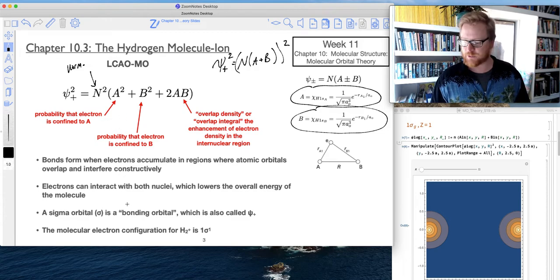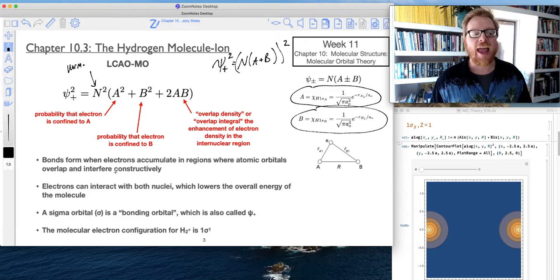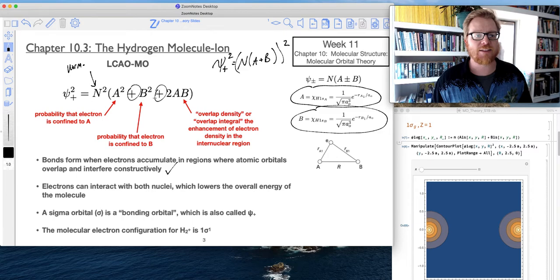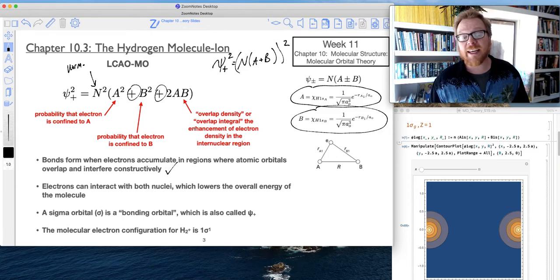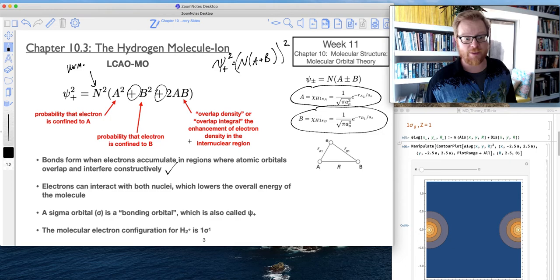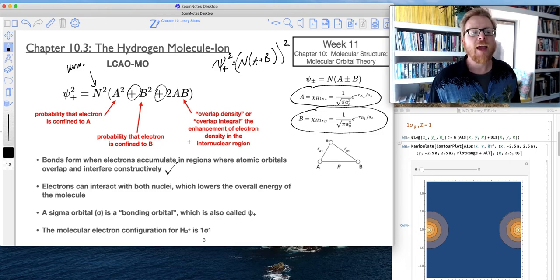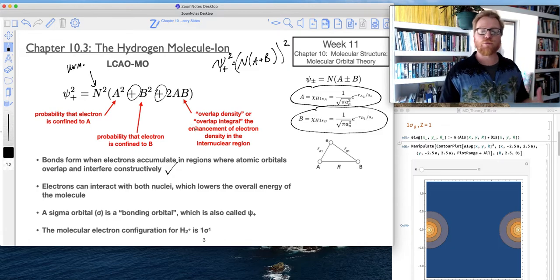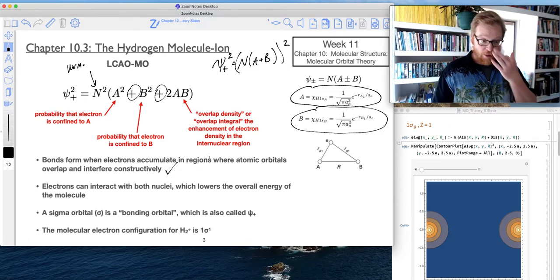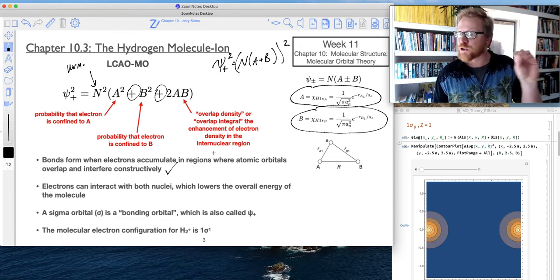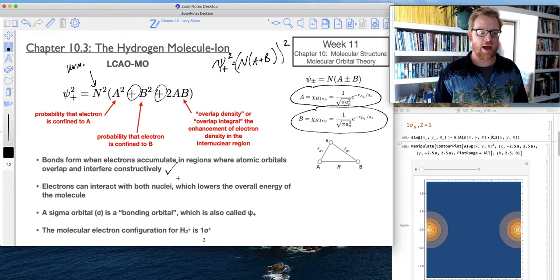So according to MO theory, here's the concepts to know. Bonds form when electrons accumulate in regions where atomic orbitals overlap and interfere constructively. So this addition sign, these plus signs, those are going to give us constructive interference as I'll show you momentarily. And we know that a bond will form according to MO theory if there is constructive interference in that internuclear zone between the two nuclei.